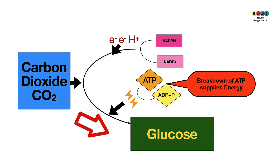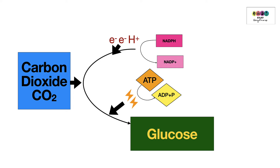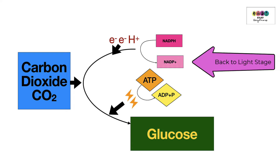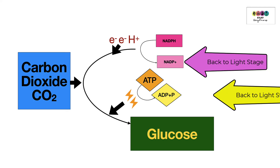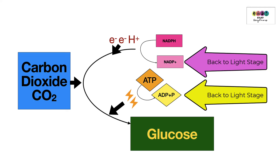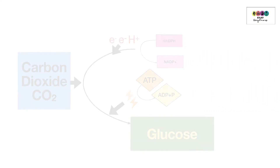These reactions are fueled by the breakdown of ATP, which was also made in the light stage. When ATP breaks down it forms ADP and a phosphate. Once the electrons and proton are transferred, NADP+ returns to the light stage, and once ATP is broken down, ADP and phosphate also return to the light stage.